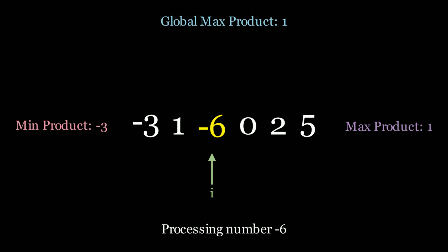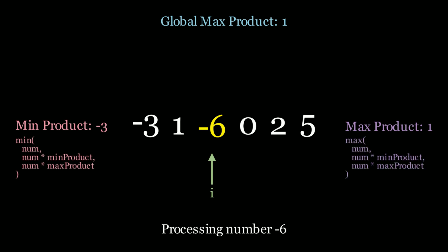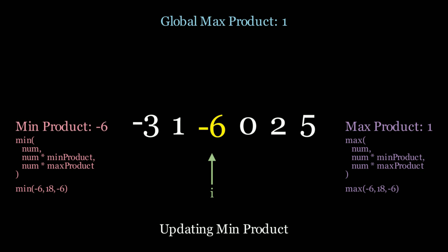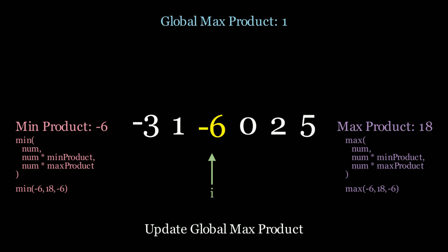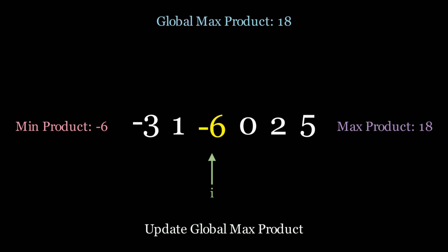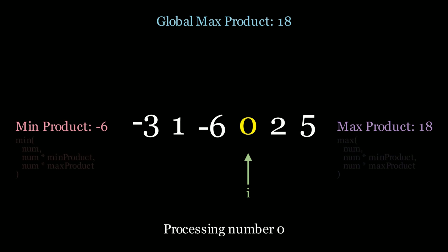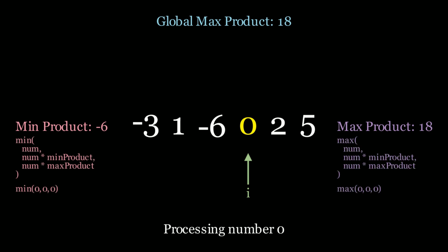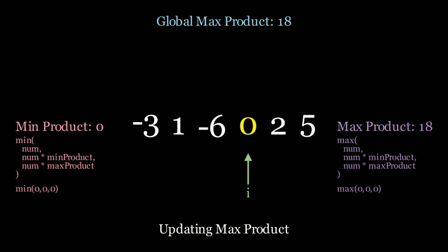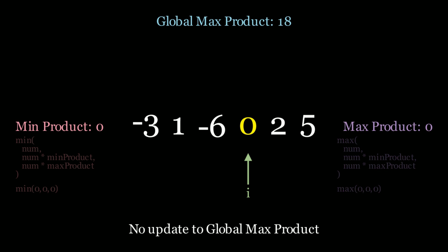Moving to negative 6: the min product is the minimum between negative 6, 18, and negative 6, so we update to negative 6. The max product becomes 18, so we update that. Since 18 is greater than the current global max of 1, we update the global max product to 18. Now at element 0: as we've seen before, zero zeros out the min and max products. We take the minimum and maximum between 0, 0, 0 — which is 0 for both. We don't update the global max product because 18 is greater than 0.